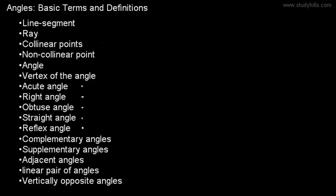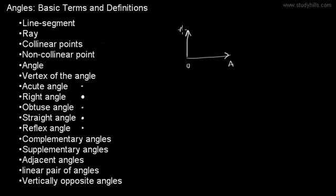Now we will see different types of angles. First, we will see the right angle and the straight angle. If we have one ray OA and another ray is perpendicular to it, then this angle is 90 degrees, and a 90-degree angle is called a right angle. Another ray starting from point O and forming a straight line forms a straight angle.